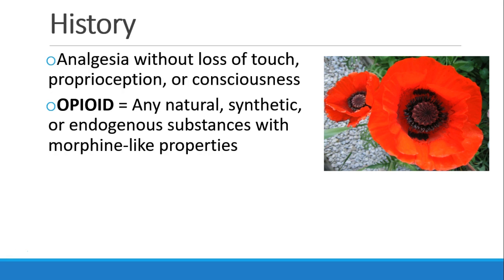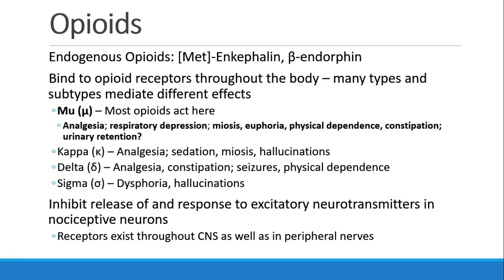Opioids are any natural, synthetic, or endogenous substance that has morphine-like properties — specifically, analgesia without loss of touch, proprioception, or consciousness. The body has endogenous opioids that it synthesizes, including substances like enkephalins and beta-endorphins, and they bind to opioid receptors found throughout the body in virtually every tissue.